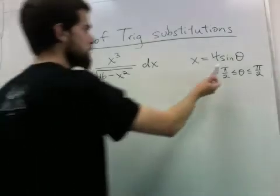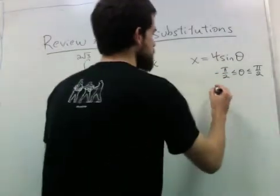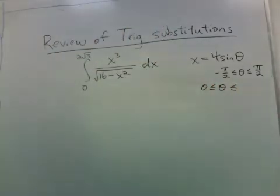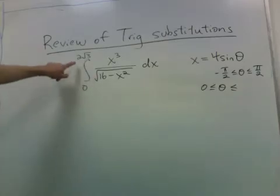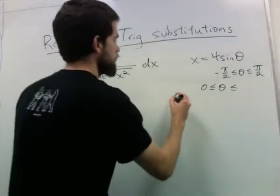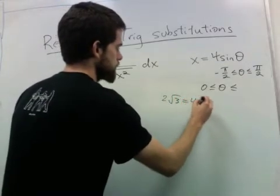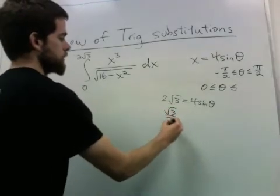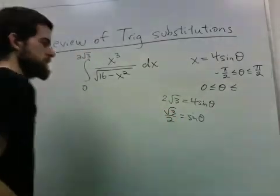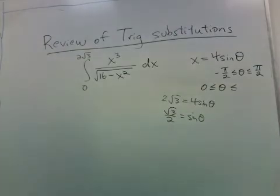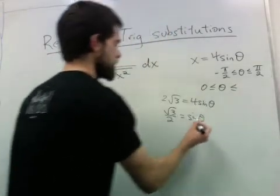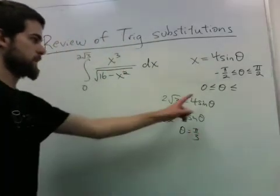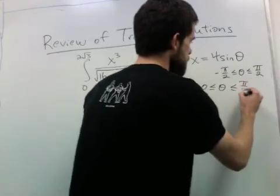When x is 0, theta will be 0. So really theta goes from 0 to, let's see, when x is 2 root 3, then what is theta? Well, we get sine theta is root 3 over 2, and that happens when theta is pi over 3. So theta really goes from 0 to pi over 3.